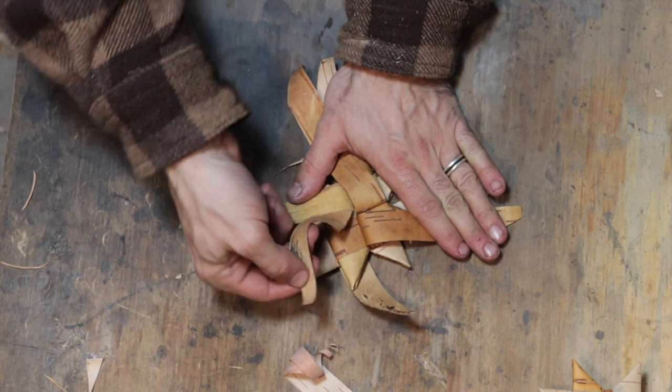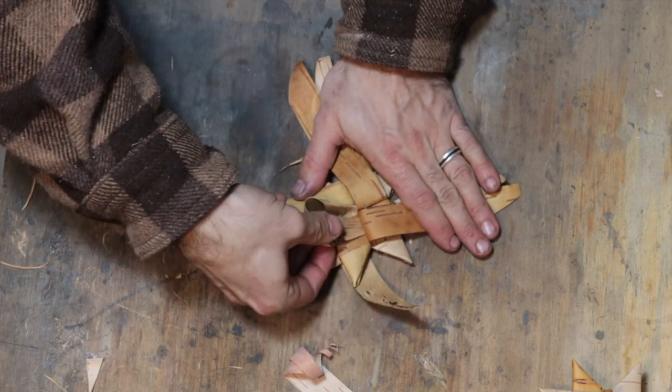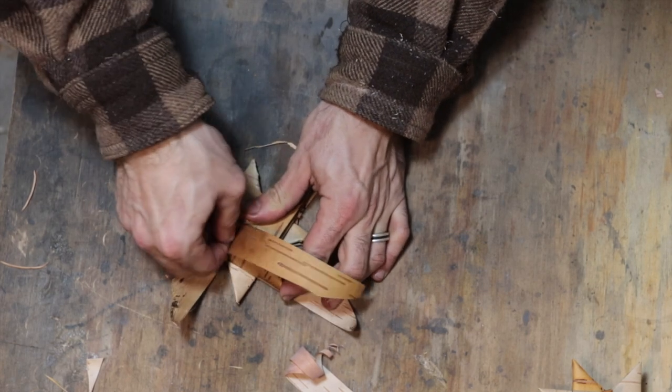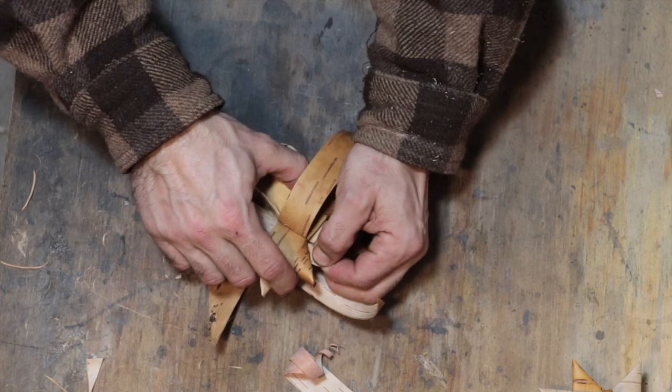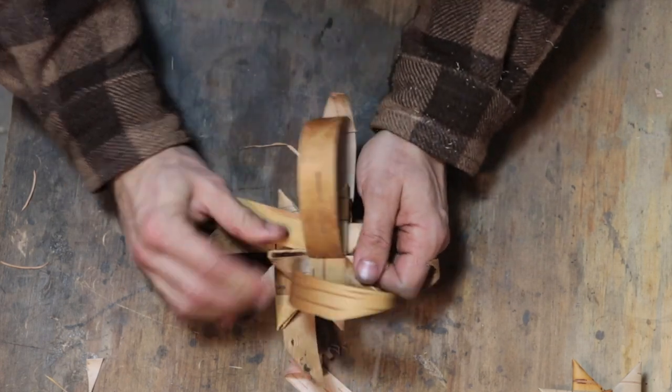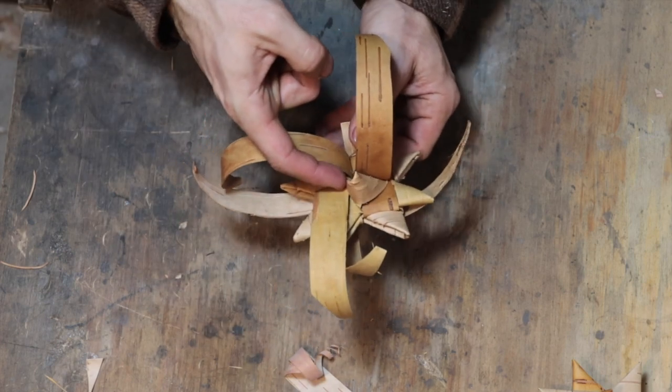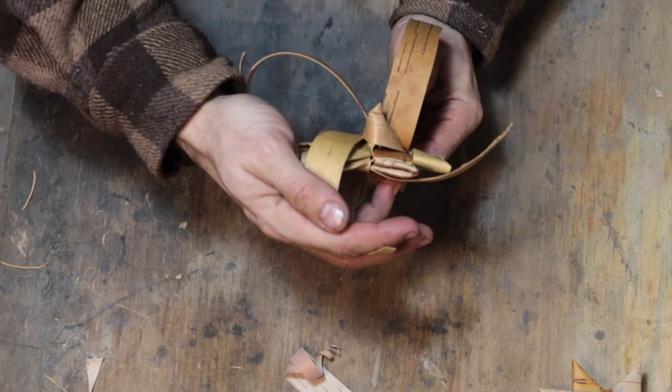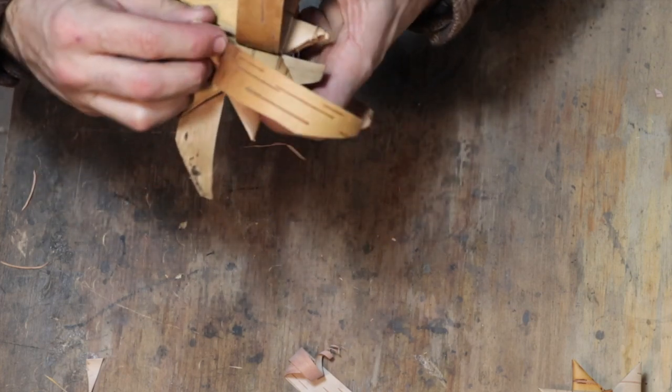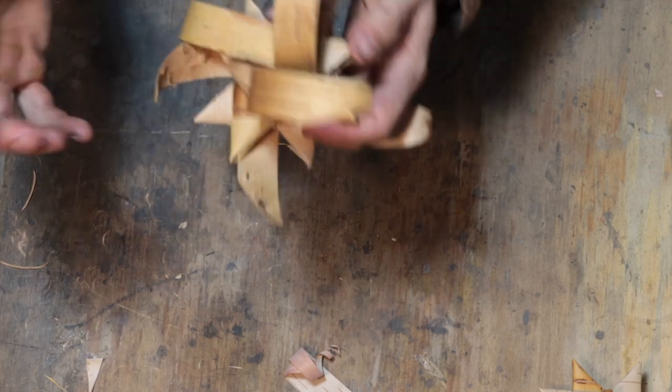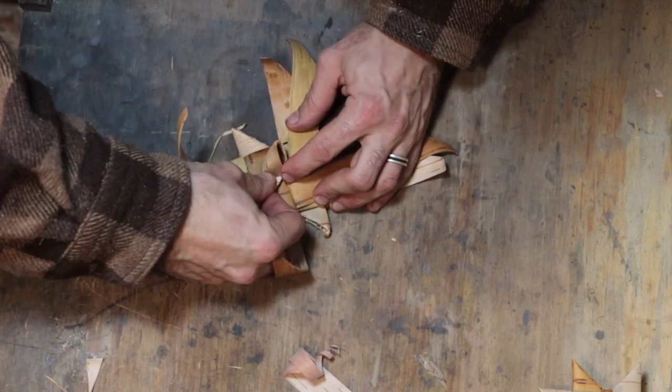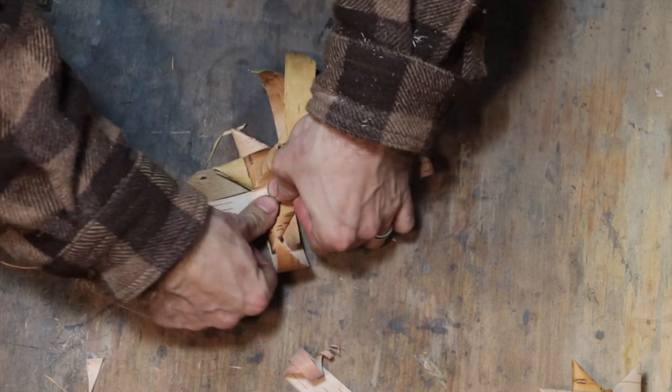Then we're going to fold this guy 90 degrees on top of itself. And then making sure that this surface stays up, I'm going to take the end, twist it around, and thread it under the one next to it. And then it'll eventually pop out here and we can start pulling on it.